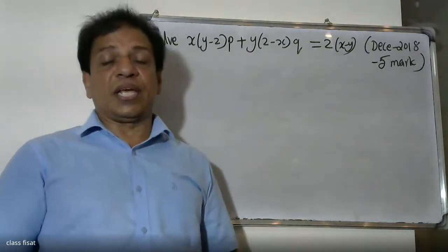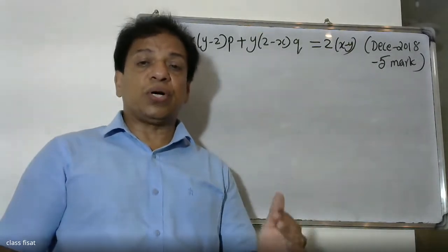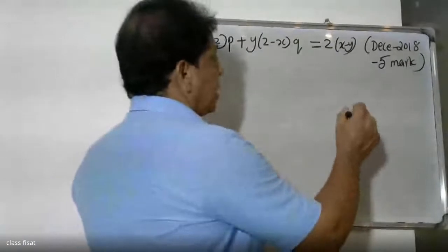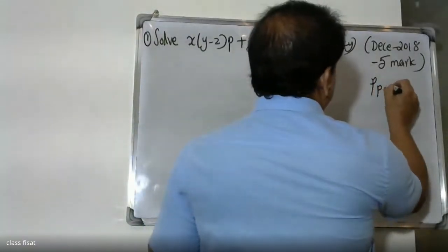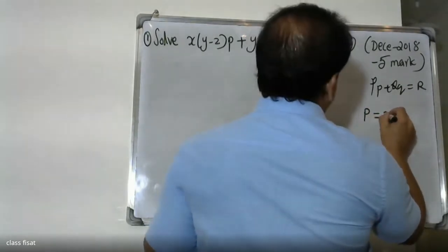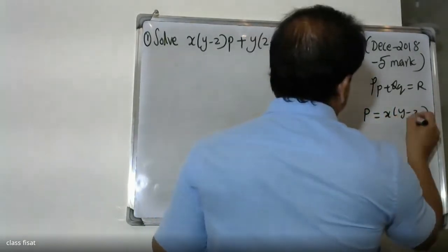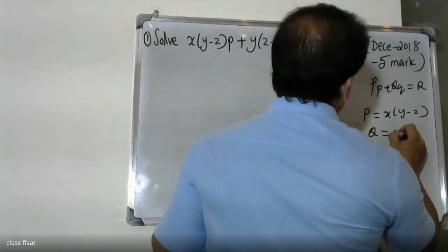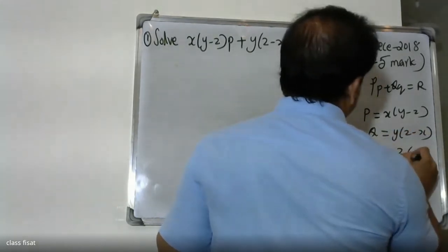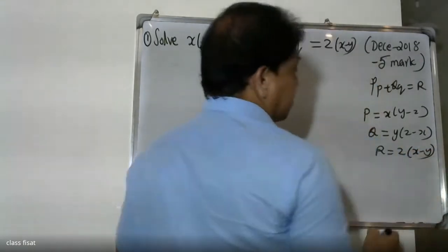This is Lagrange's linear equation, first order Lagrange's linear equation. The standard form is PP + QQ = R, where P = x(y-z), Q = y(z-x), and R = z(x-y).